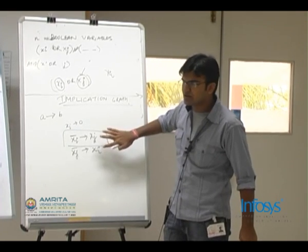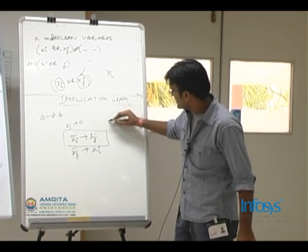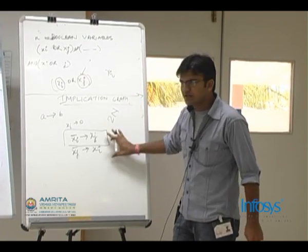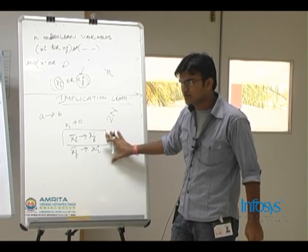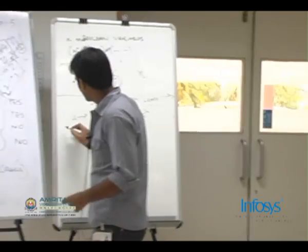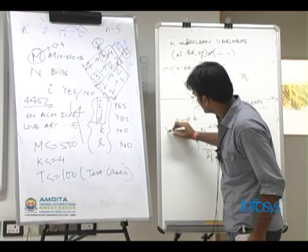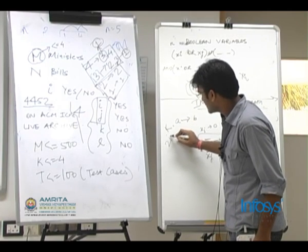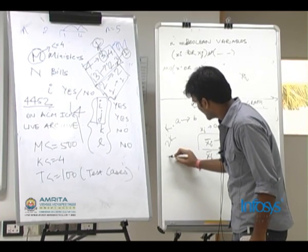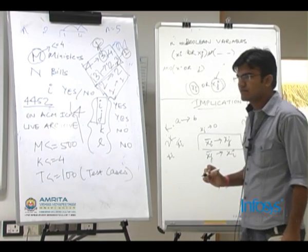So we get two implication statements for every entity. This way we'll end up with 2N implication relations. So now make a graph where you have 2N vertices. Oh sorry, if the number of variables was K then you have 2K vertices. One corresponding to XI and one corresponding to XI complement.